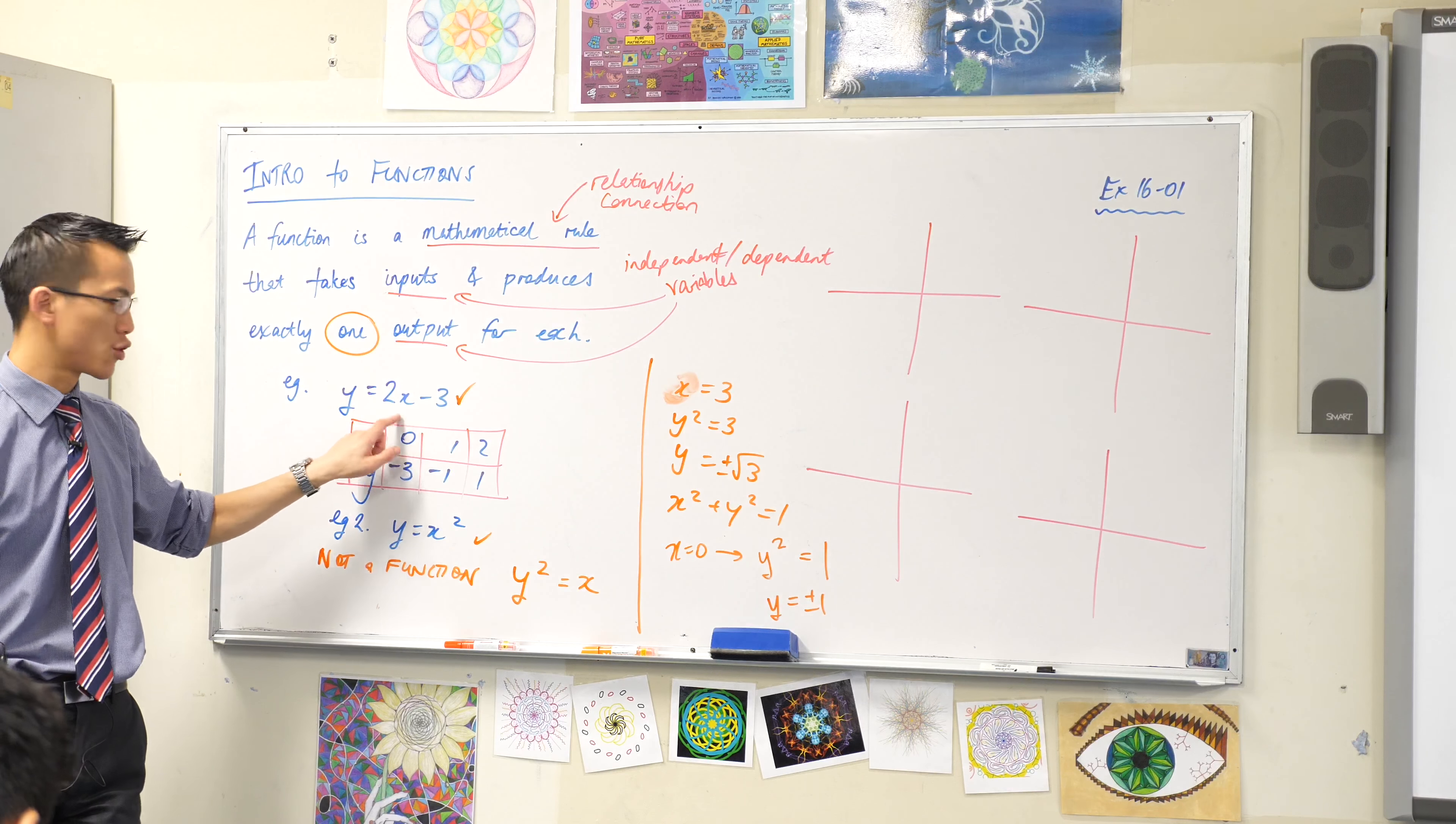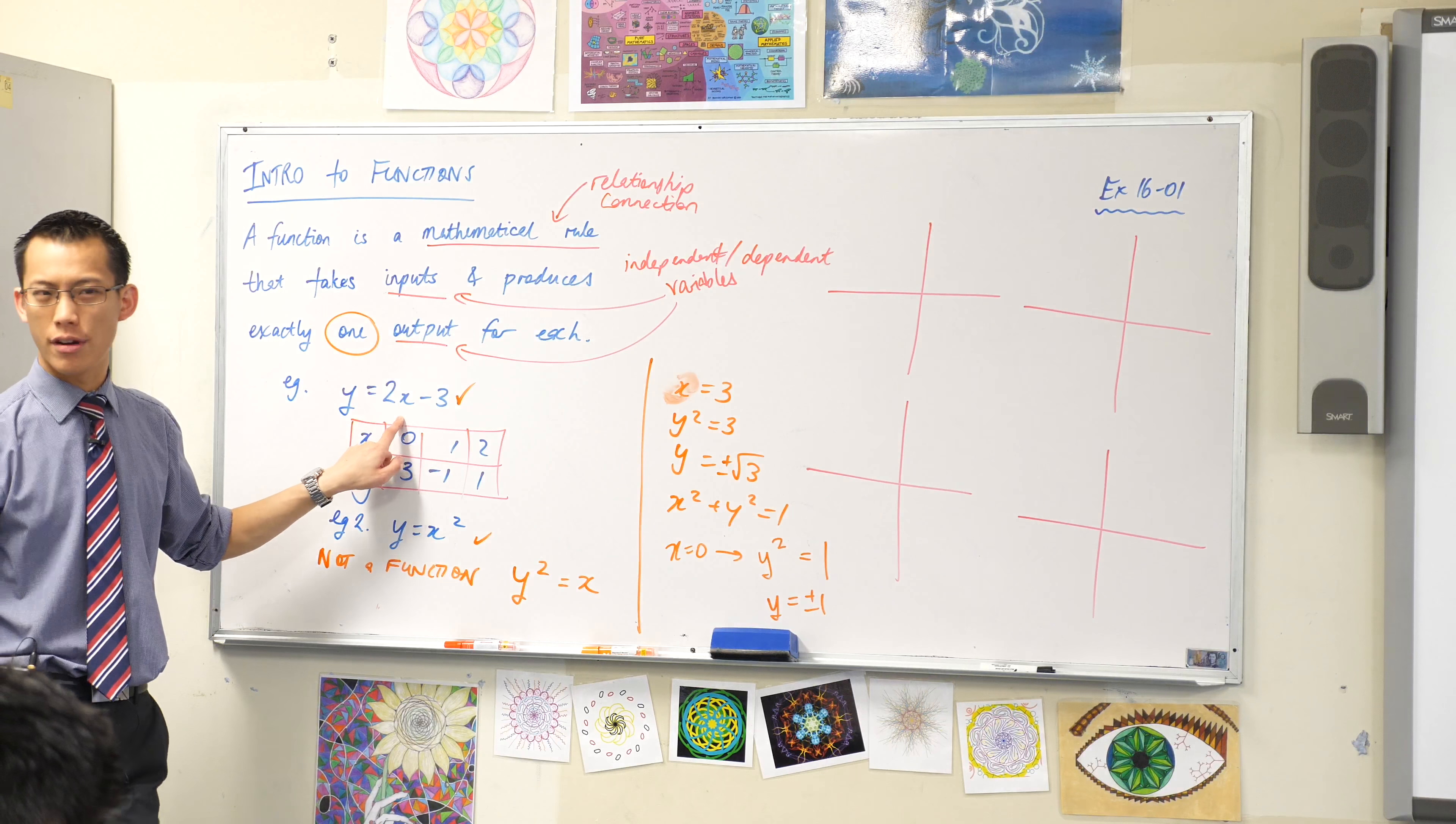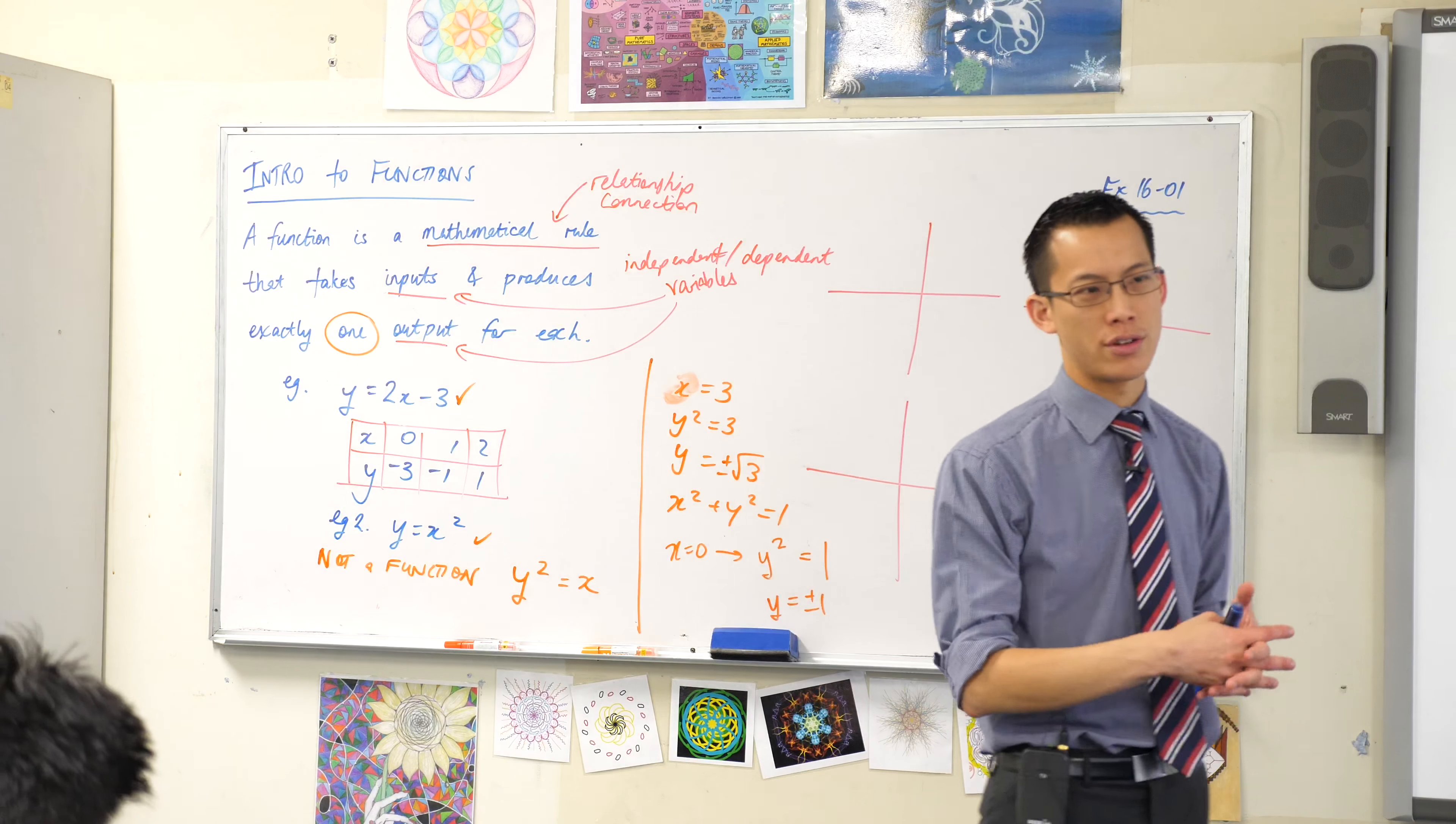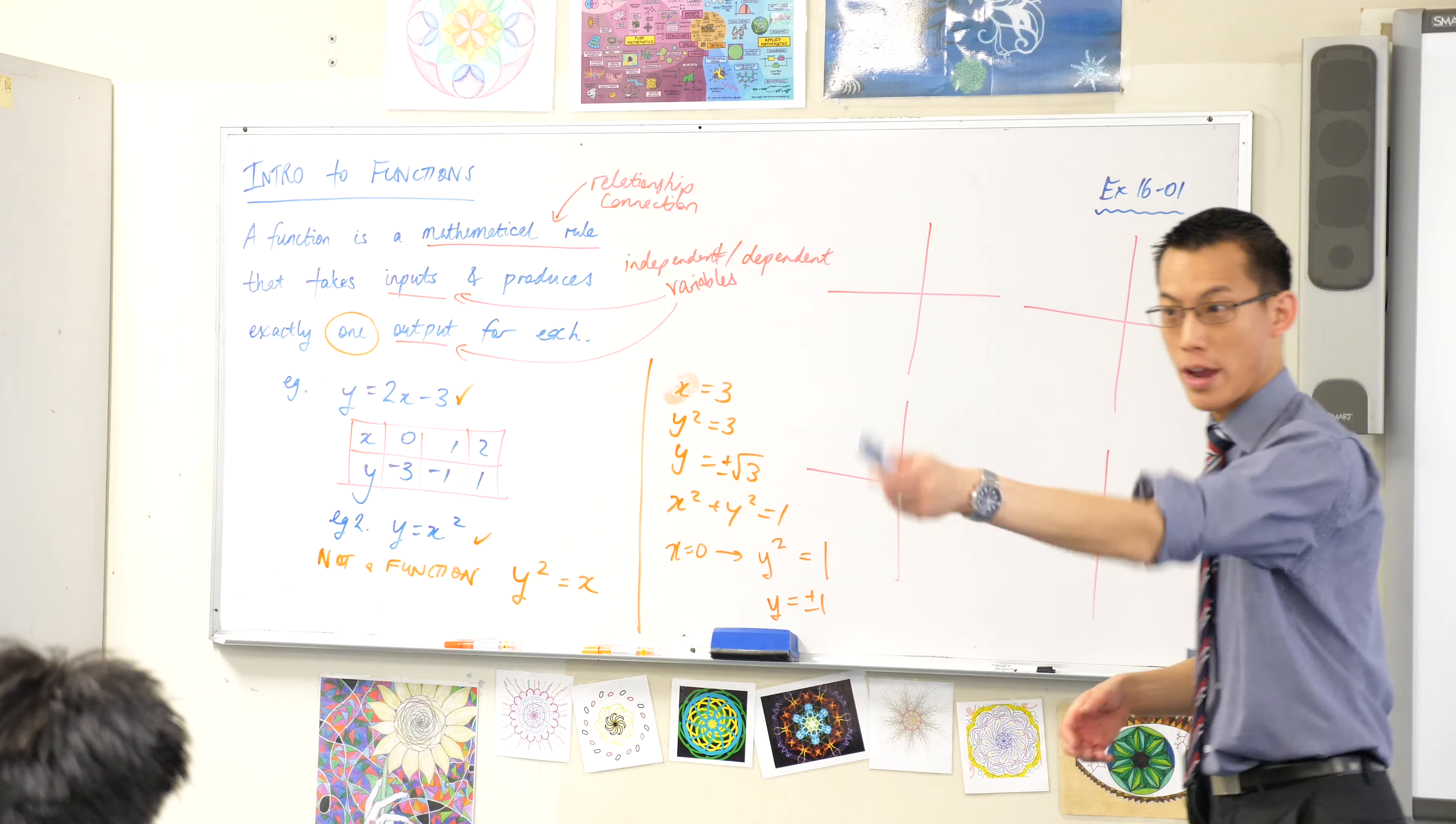So on my first set of axes I'm going to draw this guy, y equals 2x minus 3. What kind of a shape will I draw? What category of shape am I drawing? This is a straight line, very good.